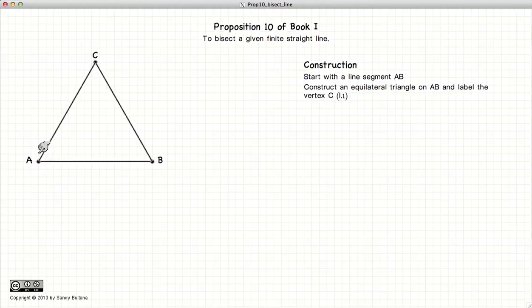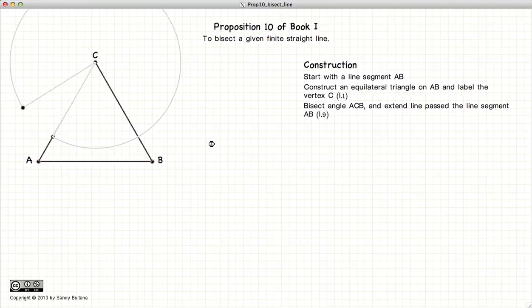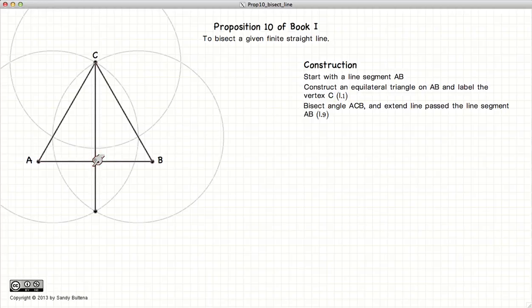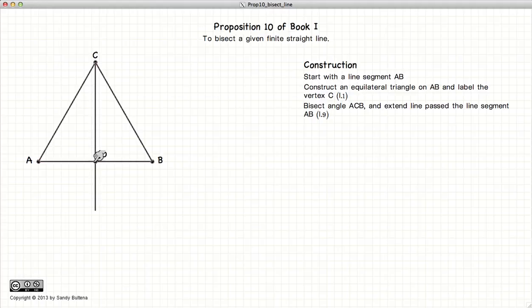The next thing we're going to do is bisect the angle ACB. And here we go. Label the intersection between AB and this line as point D, and D is now the midpoint between AB. So AD equals DB.